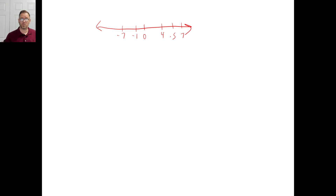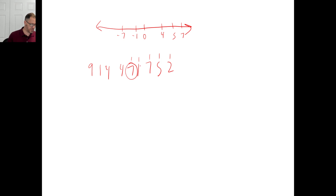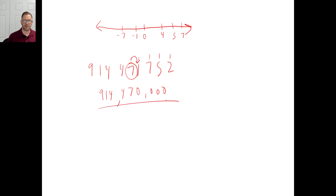Problem B: arrange from least to greatest. Only one is negative, so that's the least — negative 637. The next least is 367, then 376, then 673, then 736. Problem C: round 914,471,752 to the nearest ten thousand. The ten-thousands digit — ones, tens, hundreds, thousands, ten thousands — look to the right: not five or greater, so it stays. Everything else becomes zeros, keeping digits to the left.